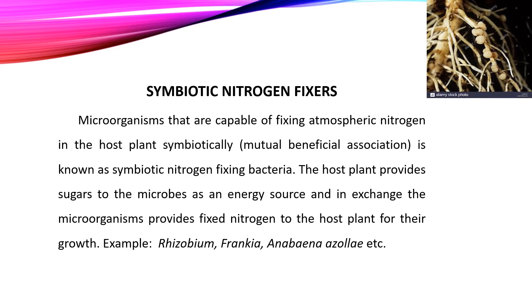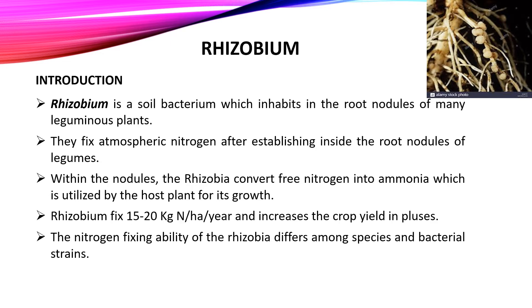Now let's see a detailed lecture on Rhizobium biofertilizer. Rhizobium is a soil bacterium that inhabits the root nodules of many leguminous plants. They fix atmospheric nitrogen after establishing inside the root nodules of legumes. Within the nodules, rhizobia convert free nitrogen into ammonia, which is utilized by the host plants for growth. Rhizobium fixes 50 to 200 kilograms of nitrogen per hectare per year and can increase crop yield in pulses by 20%.